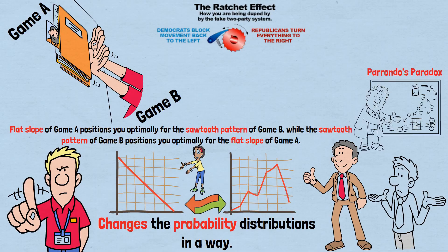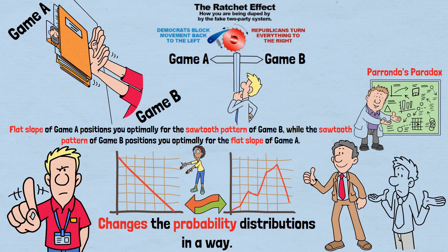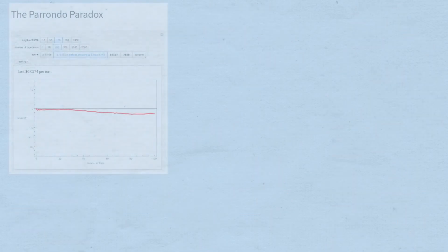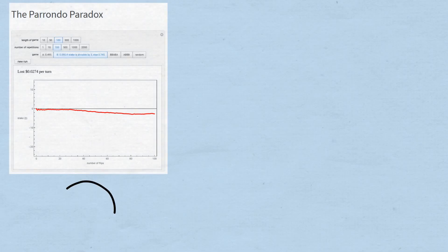The truly shocking aspect of Parrondo's Paradox is that you don't even need to alternate the games strategically. You can choose randomly between Game A and Game B—flip a coin to decide which one to play each round—and you'll still generate long-term profits. Stan Wagon's Parrondo Paradox simulator demonstrates this beautifully.